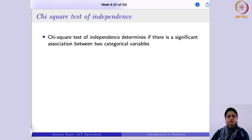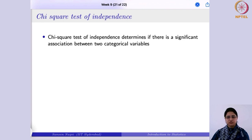If you consider the example of education and occupation, both are categorical variables and these can be dependent. If you are ruling out independence, you could conclude that these two variables are associated. We use the chi-square test of independence whenever we have to determine the independence between two categorical variables.